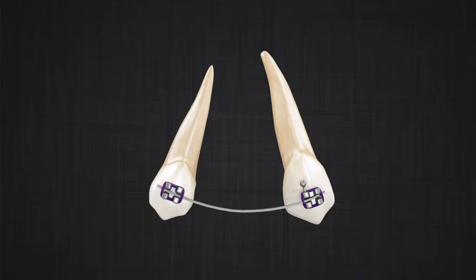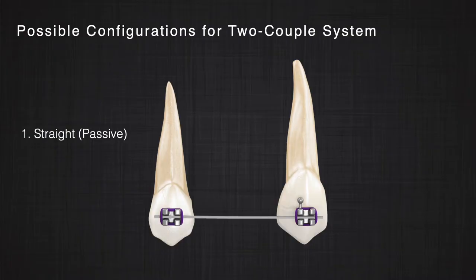What happens if we place the wire in a bracket on one side and also in a bracket on the other side? Now we have two contact points on each side — so it's not a one-couple system, it's actually a two-couple system. This system becomes very complex because not only can the magnitude of the force change, the direction of the forces and moments can change too.